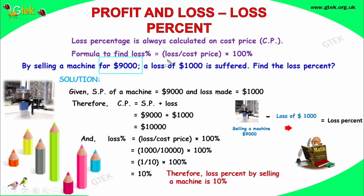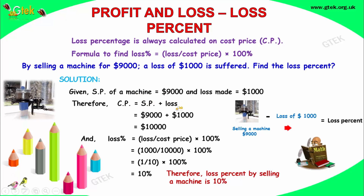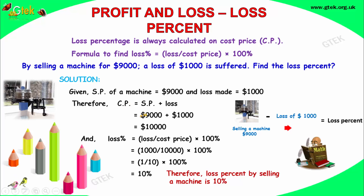By selling a machine for $9000, we made a loss of $1000. What is the loss percentage? The cost price is equal to selling price plus loss, so $9000 plus $1000 gives us a cost price of $10,000. Loss percentage is equal to loss divided by cost price into 100, so $1000 divided by $10,000 into 100 — the loss is 10%.